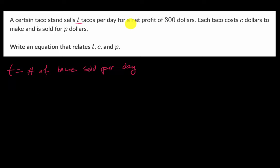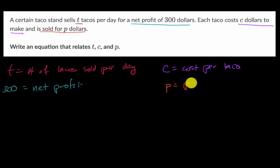They tell us the net profit of $300. So we could say 300 is equal to net profit. They tell us that each taco costs C dollars to make. So C is equal to cost per taco. And then P is what each taco is sold for. So P is equal to the price per taco.